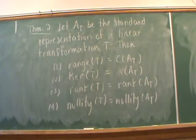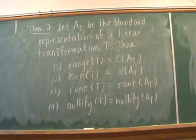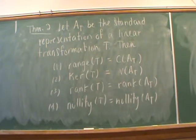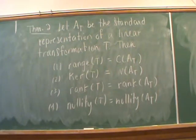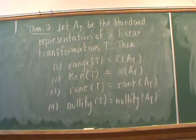Next I want to talk about the usefulness of Theorem 1 — why would we care about representing a linear transformation as matrix multiplication? Remember how easy it was to talk about the rank or the row space or column space of a matrix. Theorem 2 says if A sub T is the matrix representation of T, then: the range of T equals the column space of our matrix representation; the kernel equals the null space; and the rank and nullity of T equal the rank and nullity of our standard matrix.